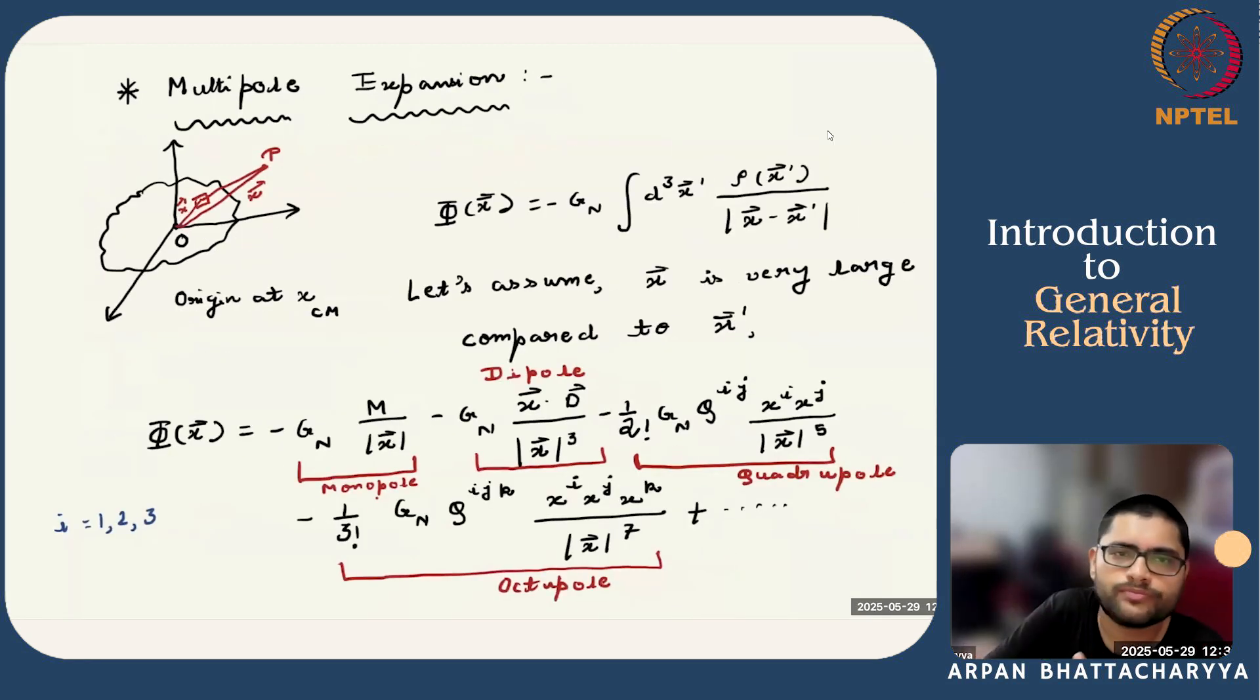And then we also introduced this multipole expansion. If we are measuring potential at a point p, which is very far away from all the points inside this extended distribution, then we can Taylor expand this integral. And we end up with this systematic expansion. First is the monopole contribution, which is basically due to the point particle of the same mass m centered at the center of mass of the extended body.